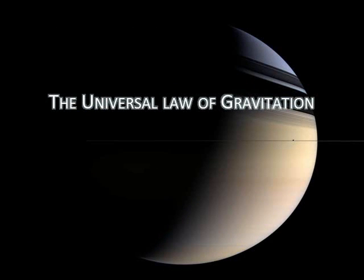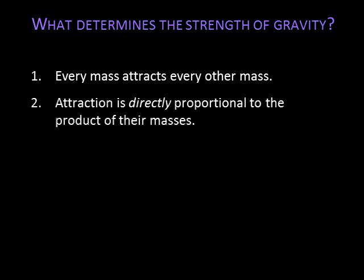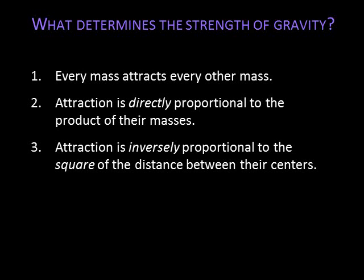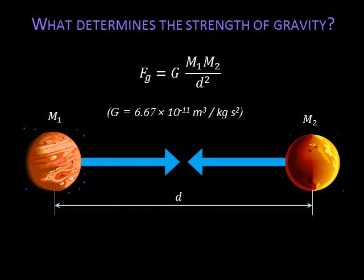Newton discovered the basic law that describes how gravity works. He elegantly used mathematics to describe the force of gravity in his Universal Law of Gravitation. Three simple statements summarize gravity. First, every mass attracts every other mass. Second, that attraction is directly proportional to the product of the masses. And third, the attraction is inversely proportional to the square of the distance between their centers. Mathematically, all three statements can be combined into a single equation. It says that the force of gravity, Fg, is equal to the product of the masses of two objects, M1 and M2, divided by the distance between them squared. The symbol G is a constant, called the gravitational constant.